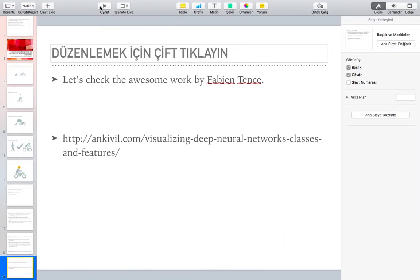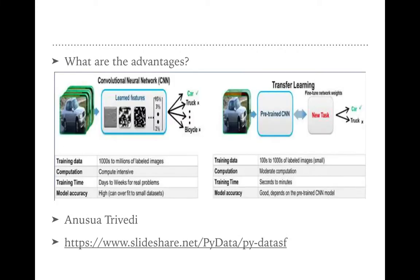Thanks to Fabian for this awesome work — you should check it out. What are the advantages of transfer learning? These methods are not guaranteed but they have theoretical background. If you transfer the learned features or filters to your problem, your computation intensity will be moderate because you will freeze lots of layers and just fine-tune them. Training time will also be very short because you're freezing the convolutional layers and don't want to lose those filters. Your model accuracy will likely be good, though it's not guaranteed — but we'll try it on our dataset.